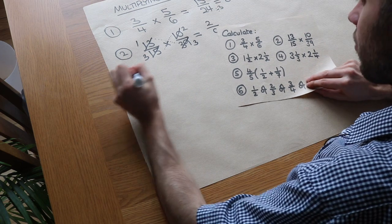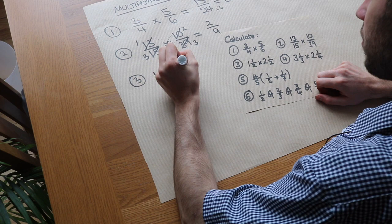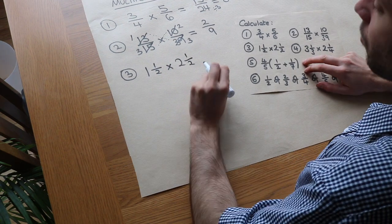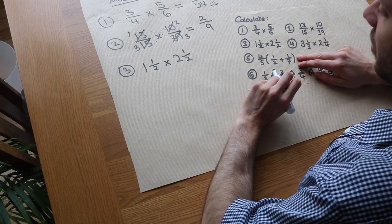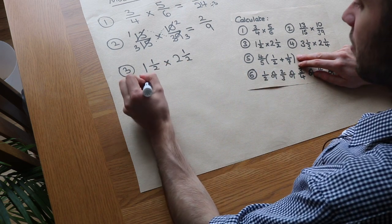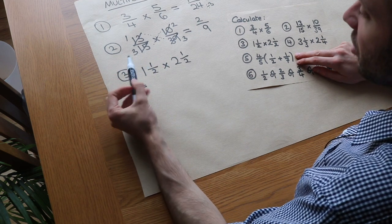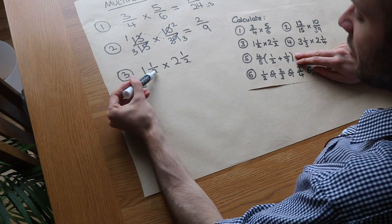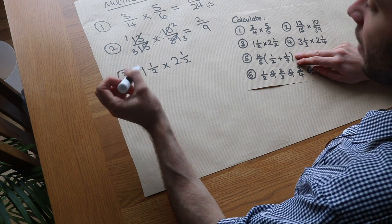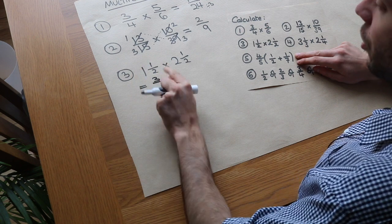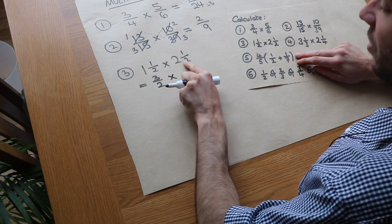For question 3 I've got 1 and a half multiplied by 2 and a half. When you have mixed numbers you need to convert them to improper fractions first, then apply the same principle. For 1 and a half: the whole part times the denominator is 1 times 2 equals 2, plus the 1 gives 3, so it's 3 over 2.